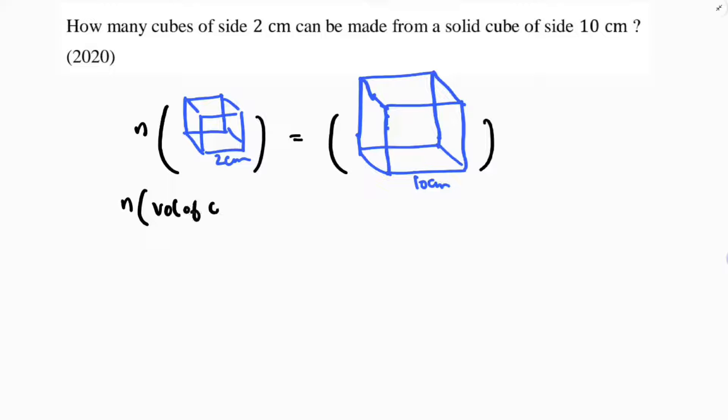Volume of cube with edge 2 centimeters, volume of cube with edge 10 centimeters. Now, volume of cube is a³. I'll write a³ and here to show the difference, capital A³. So n into 2³ equals 10³.